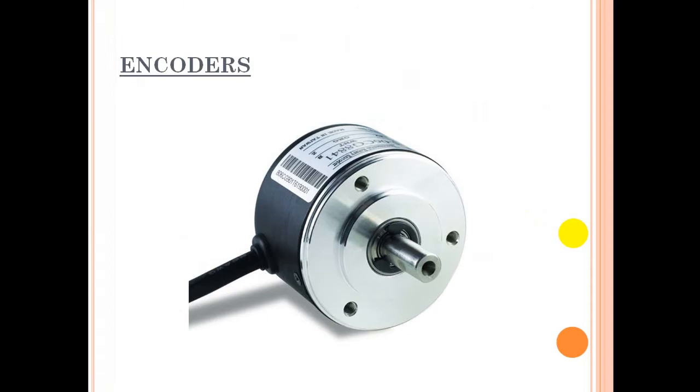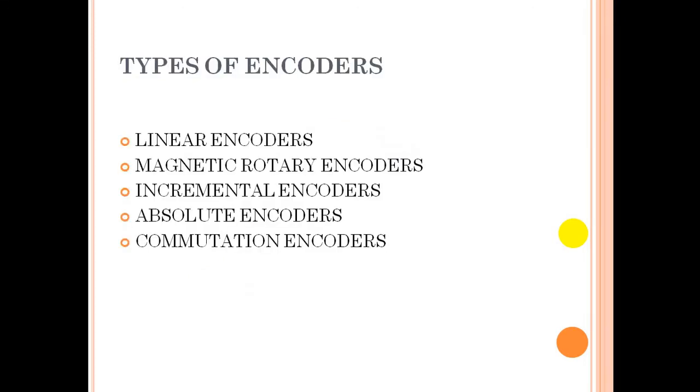This is the encoder which is used for positional feedback of the servo motor. It's connected at the back of the servo motor. Encoders are divided into a few types: linear encoders, magnetic rotary encoders, incremental encoders, absolute encoders, and commutation encoders. Linear and magnetic rotary encoders are the two basic types, and incremental and absolute are subdivisions of these categories.